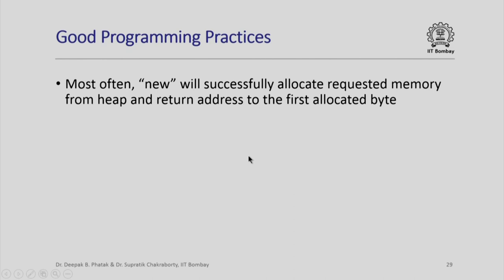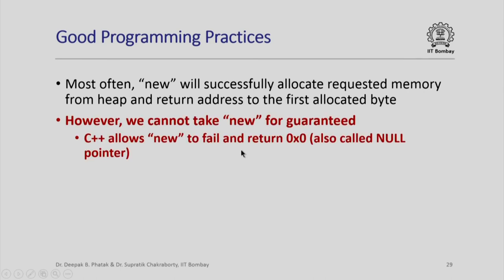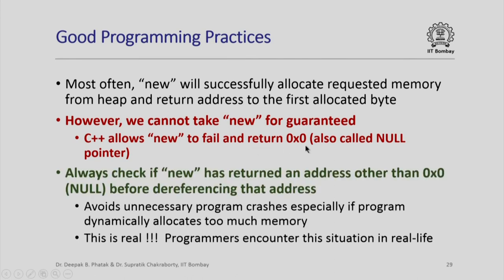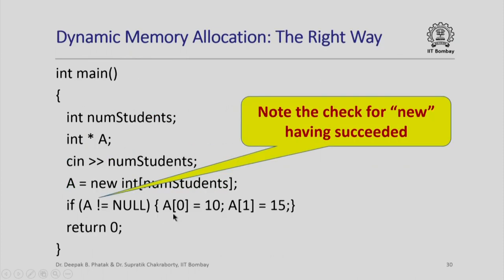When you are using dynamically allocated memory, there are some good programming practices you should be aware of. Most often a call to new will successfully allocate the requested memory from the heap and will return the address to the first allocated byte. However, we cannot take new for granted. C++ does allow new to fail, in which case it returns the 0 address, which is also called the null pointer. Therefore, you should always check that new has not returned the 0 address before dereferencing that address. This will avoid unnecessary program crashes, particularly if your program is dynamically allocating too much memory and you have run out of space on the heap — this is a real issue that programmers actually encounter in real life. So after you allocate memory for the array, you check whether it is not null, and only then do you access the elements of the array.